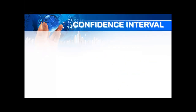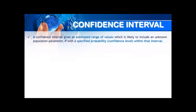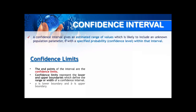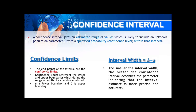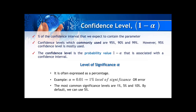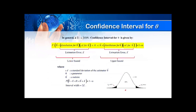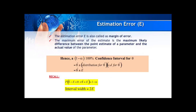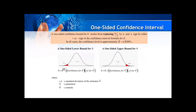To recap: confidence interval is the estimated range of values; confidence limit gives the lower and upper boundaries; interval width = B − A, and a smaller width means better, more precise estimation; confidence level is the percentage probability containing the parameter; significance level alpha is the percentage of error; and interval width equals 2 times the estimation error. In confidence intervals we also have one-sided lower bound and one-sided upper bound. That's it for the introduction to confidence intervals. We will now go to examples and exercises of estimation using confidence intervals.